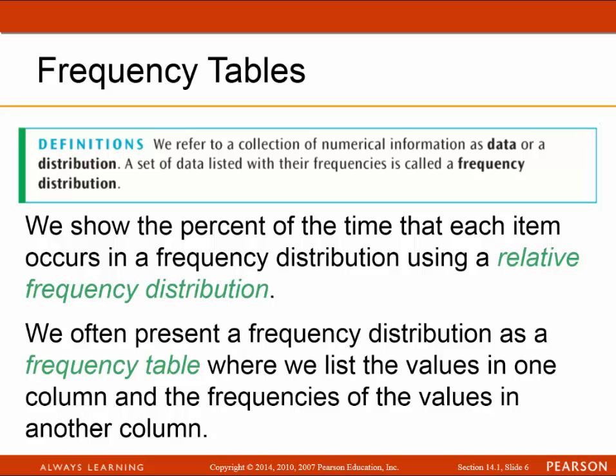When we construct the table, we have different columns: a column for the classes or groups, a column for the frequency or tally showing how many times each one occurs, and the relative frequency, which is the number of times a class occurs divided by the total.